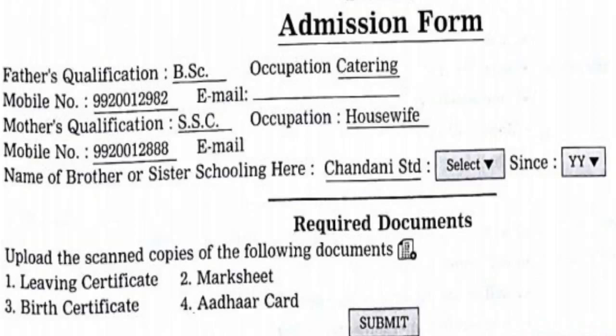In the admission form one also has to fill up parent details — father's qualification, occupation or profession, mobile number, and email. Then mother's qualification, occupation, mobile number, and email. Then name of brother or sister, schooling, standard, and since when. Required documents to upload include: living certificate, mark sheet, birth certificate, and other card. The same form is filled showing father's qualification as BSc, occupation as catering, mother's qualification as SSC, occupation as housewife. Sister's name is Chandani, standard 9th, since 2015. Required documents are uploaded.